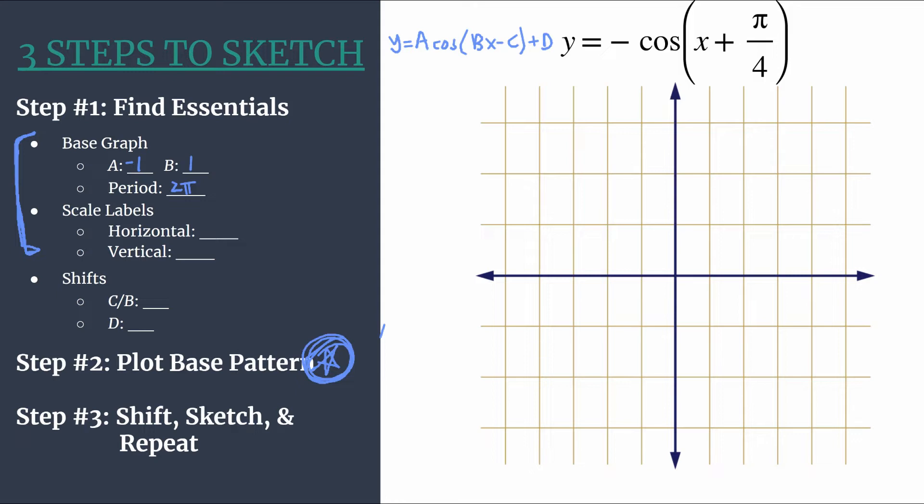All right, so now on to our scale labels. For our horizontal scale labels, we really intentionally designed this so each of our four key points aligns with horizontal tick marks. We'll take our period and divide it by four. So two pi over four reduces to pi over two, and that's how we'll label our horizontal axis. And our vertical axis we can use one.